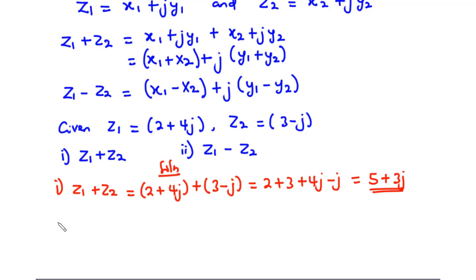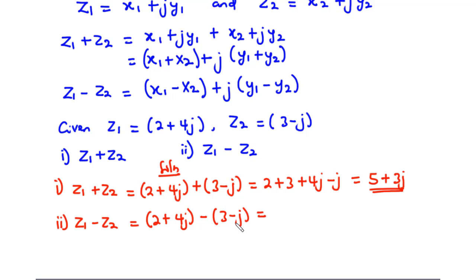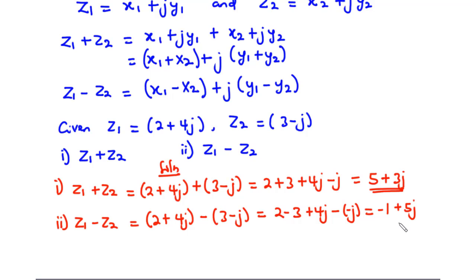For z1 minus z2, we have 2 plus 4j minus 3 minus j. This gives 2 minus 3 for the real parts, and 4j minus negative j for the imaginary parts. So we get negative 1 for the real part, and 4j plus j equals 5j for the imaginary part. Therefore z1 minus z2 equals negative 1 plus 5j. Thanks for watching and see you in the next video, where we will focus on how to multiply and divide complex numbers.